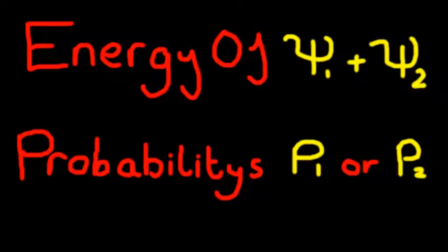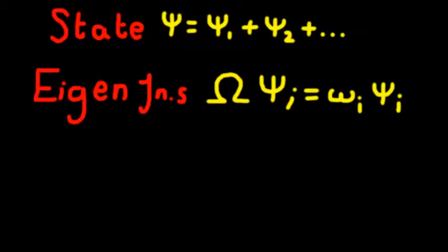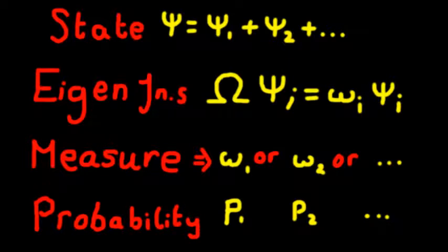To summarize: a state made of eigenfunctions for an observable will not have a definite outcome when the observable is measured. Rather, you will find the probability of an outcome, with the actual outcome being the eigenvalue for one of the eigenfunctions that the wave function is made up of — so it will be either E1 or E2 when the wave function is made up of phi1 and phi2.